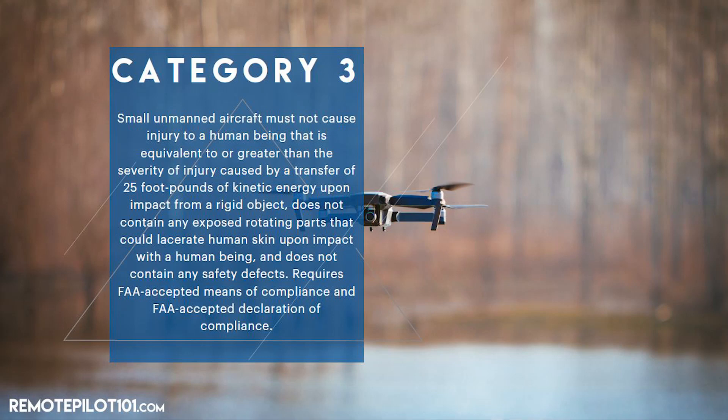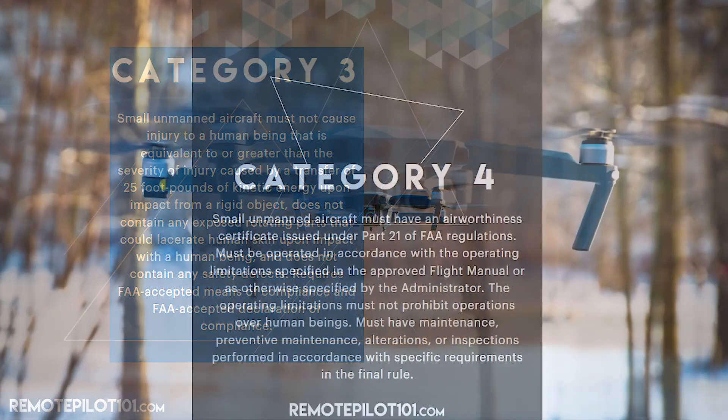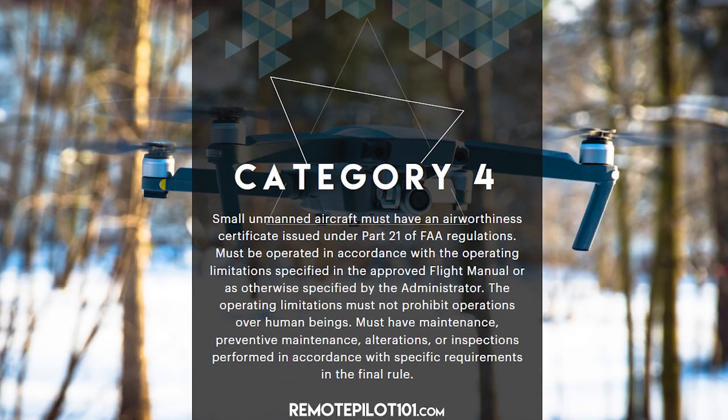And it continues on here. You can see Category 3 is very similar — it just jumps up to 25 foot-pounds of kinetic energy upon impact from the same rigid object, which is just a little bit strange. Category 4 actually gets into FAA Part 21 regulations, which is essentially airworthiness and compliance. We're talking some big drones — big aircraft, really — at that point when we get into Category 4.